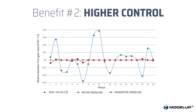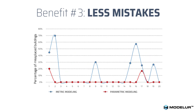Another clear benefit is a higher level of control. We researched how hard it was for participants to reach a target FAR using just the regular metric approach — shown by the blue line. It was quite hard for them to get to the right FAR of 1.5; most were either above or below it, and they used more time to achieve this. On the other hand, when using the parametric approach, shown by the red line, results were much closer to the target FAR of 1.5.